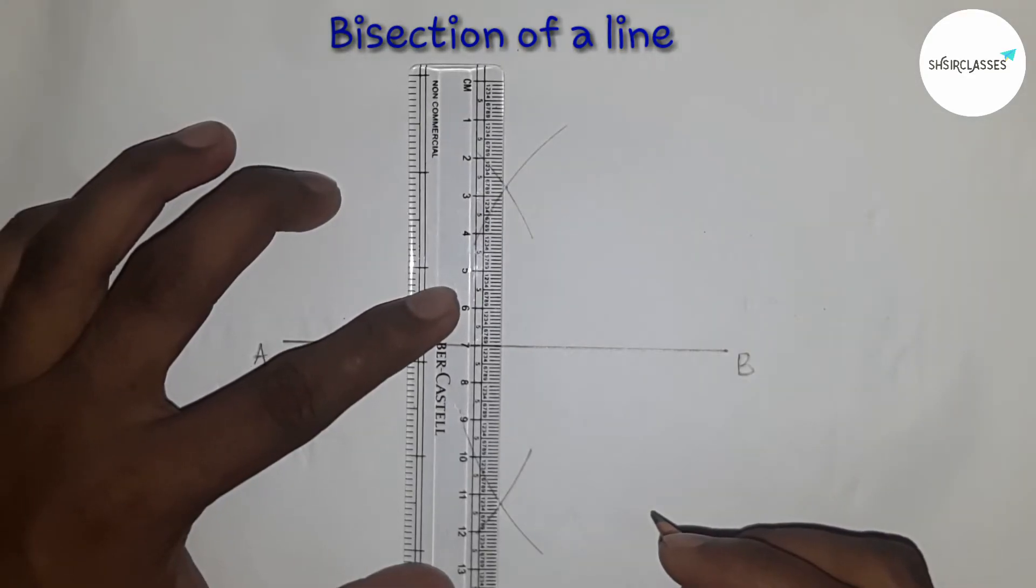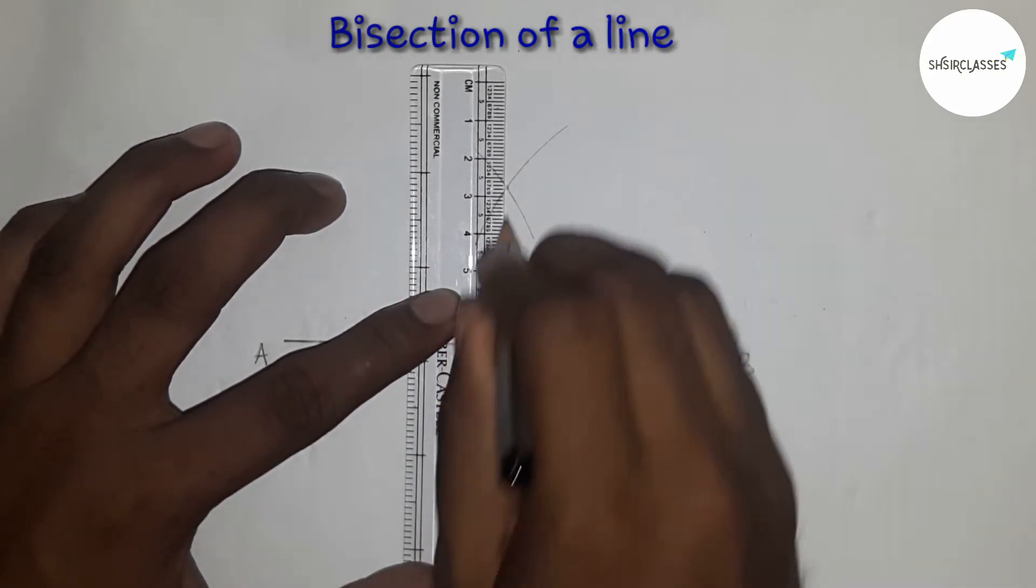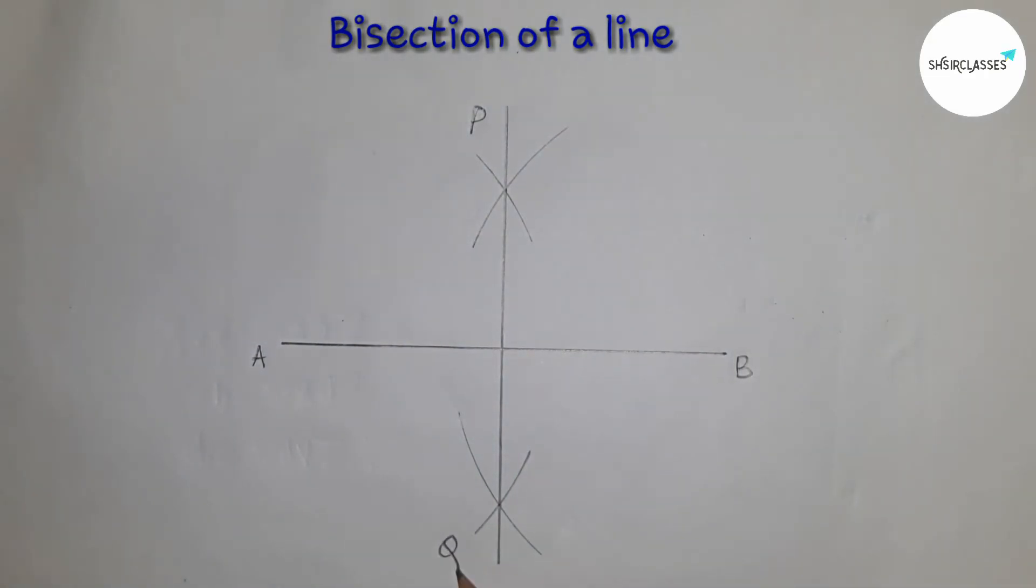Now I'm going to join these two points by this way, and the line is PQ. And this point is D. Now I'm going to check whether it is wrong or correct.